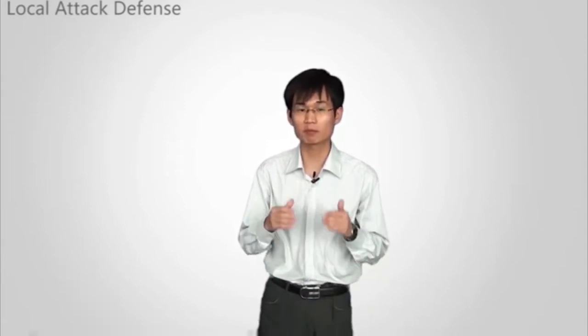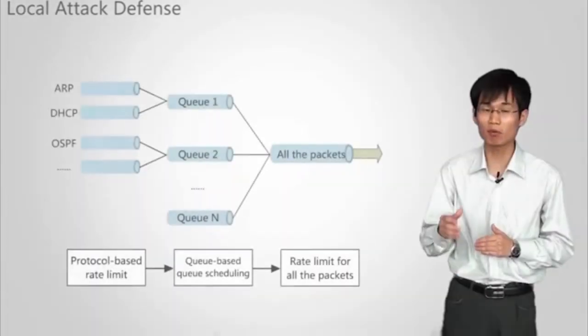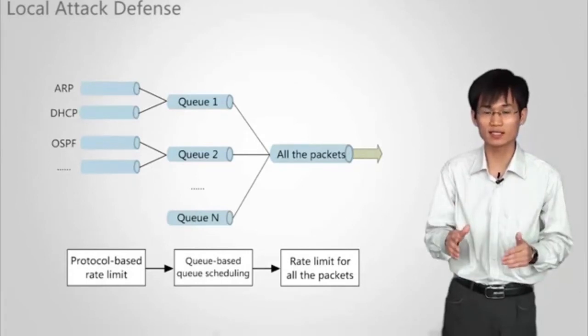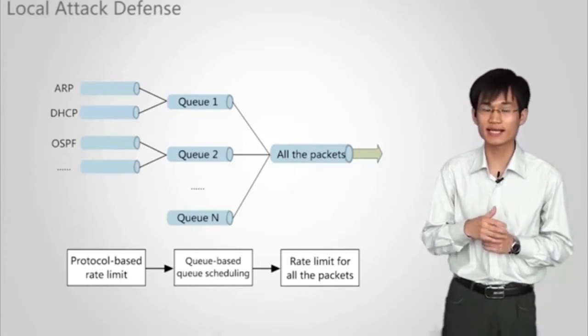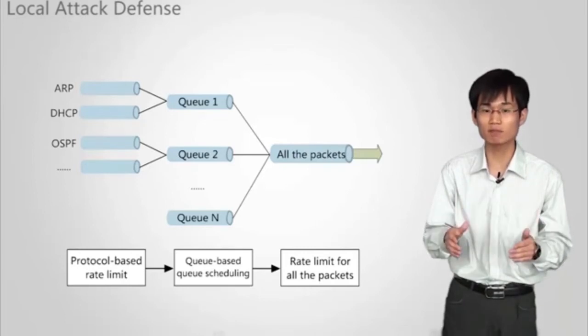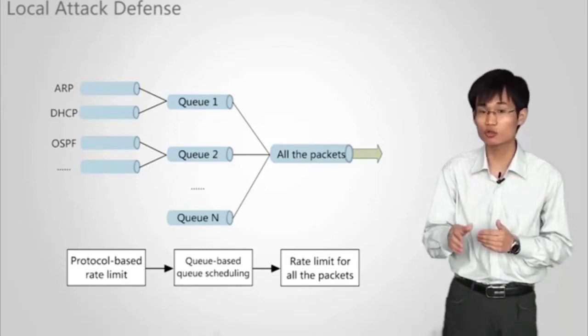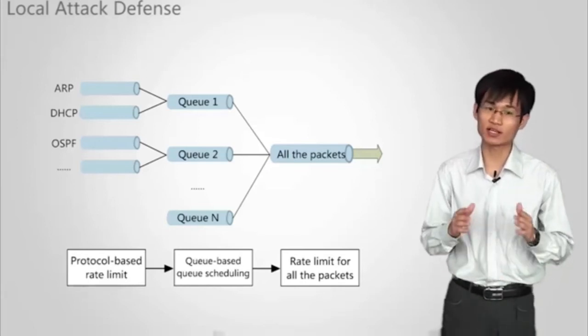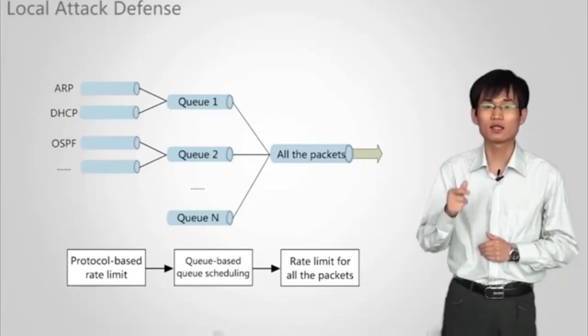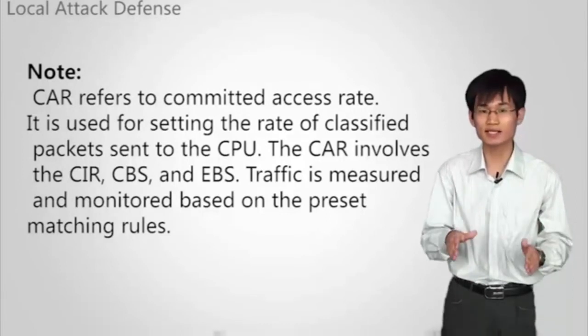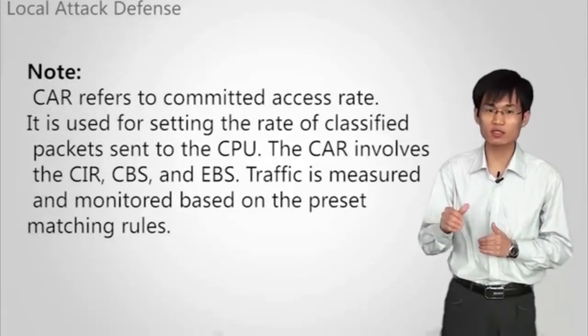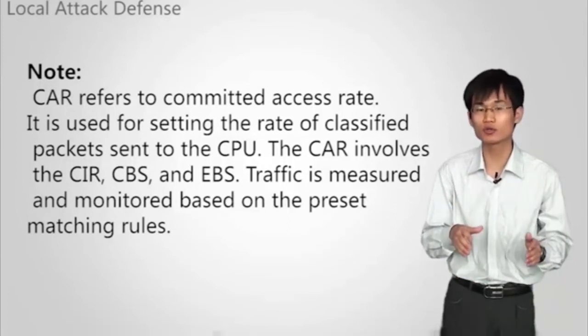Huawei Enterprise case-shaped switches provide the local attack defense function that protects the CPUs by limiting the rate of packets sent to the CPU, for example, filtering and classifying packets sent to the CPU, limiting the number of such packets and their rate, setting the priority of such packets, and discarding packets that do not match certain rules. Local attack defense is implemented based on the blacklist and CAR. Please note, the CAR refers to Committed Access Rate. It is used for setting the rate of classified packets sent to the CPU.